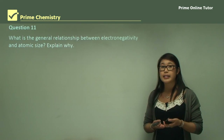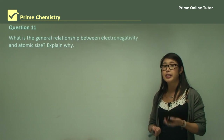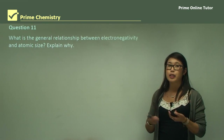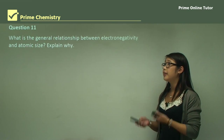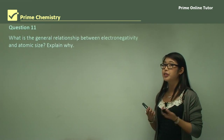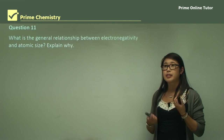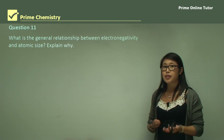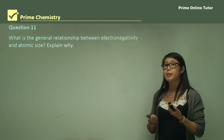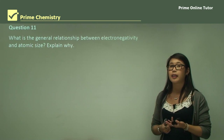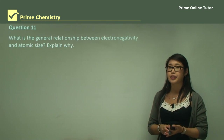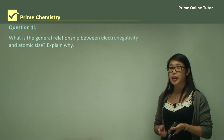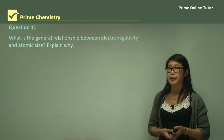Ionization energy is the energy you need to put in to get an electron out. Electronegativity has different effects depending on atomic size — the smaller the atom, the more electronegative it's going to be, and the larger the atom, the less electronegative.